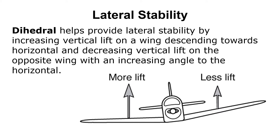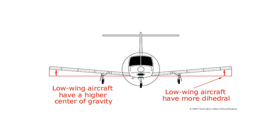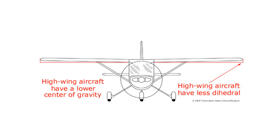Dihedral is the angle between the aircraft's wing and the horizon. Dihedral aids in lateral stability by generating more vertical lift on a wing as it dips toward the horizontal, acting to raise that wing, and less vertical lift on the upward moving wing, acting to lower it. Low wing aircraft have a higher center of gravity and therefore require more dihedral, while high wing aircraft with their lower center of gravity require less dihedral.